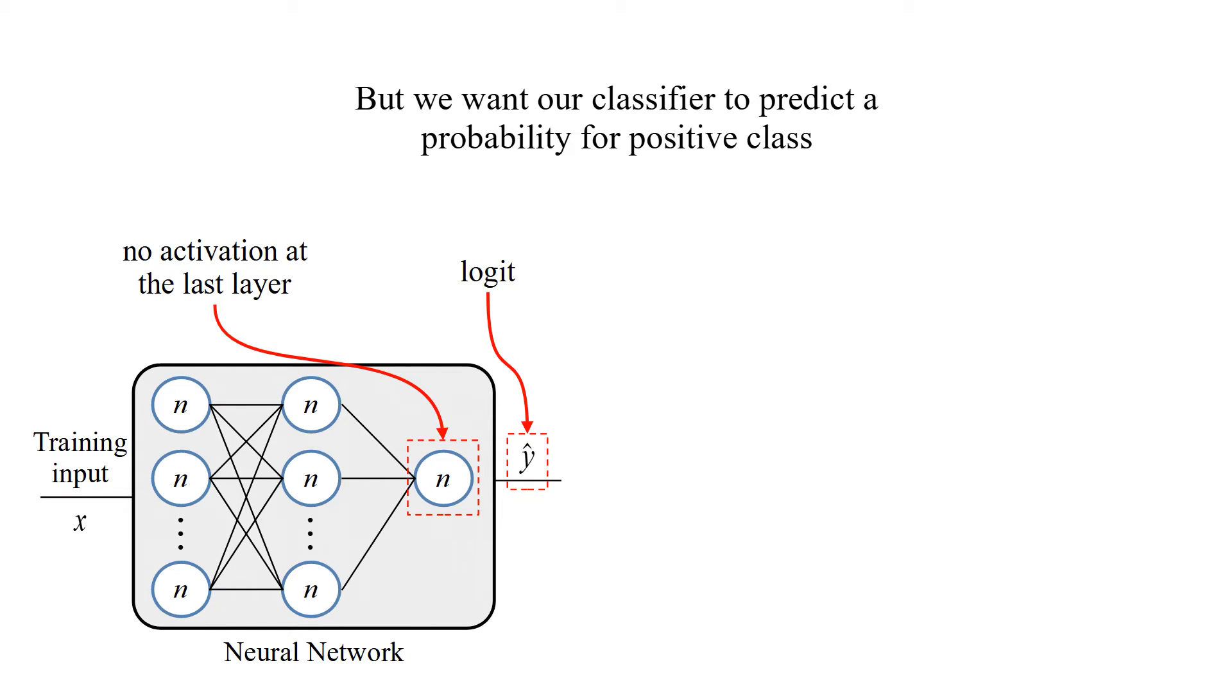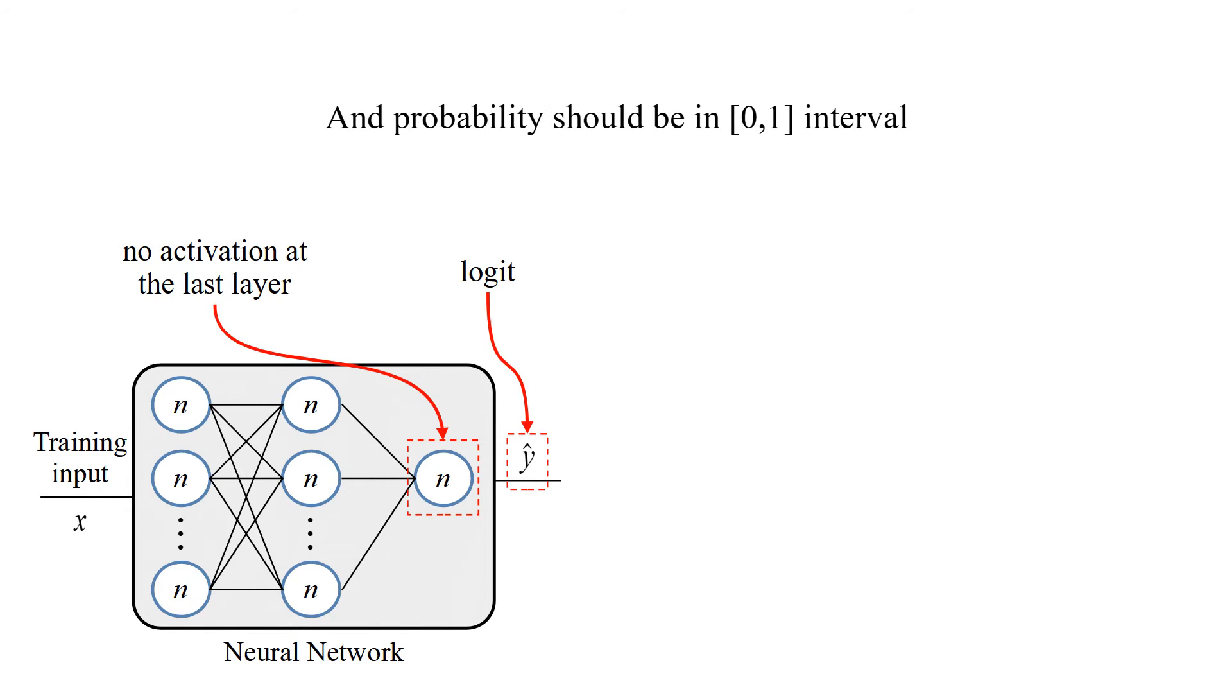But we want our classifier to predict the probability for positive class. That means we need to convert logit to probability.